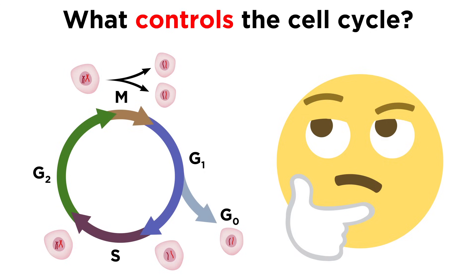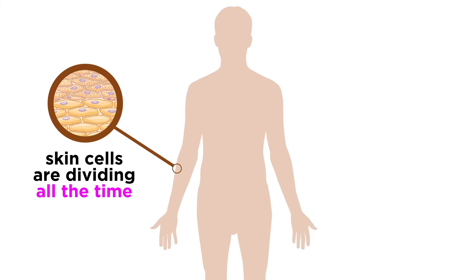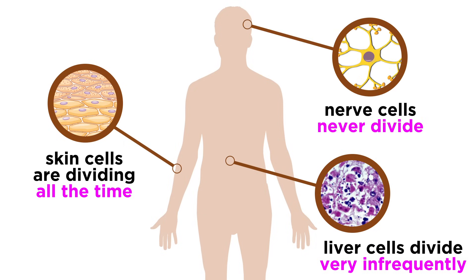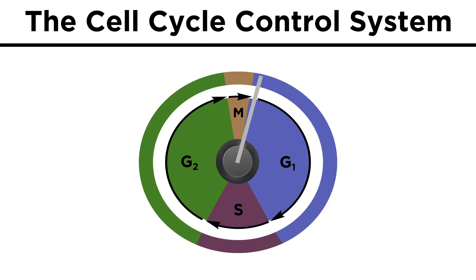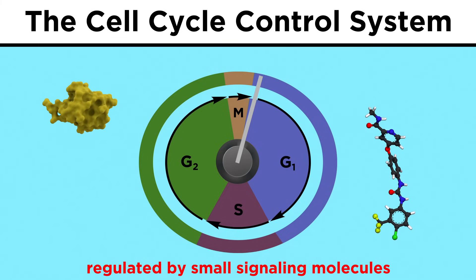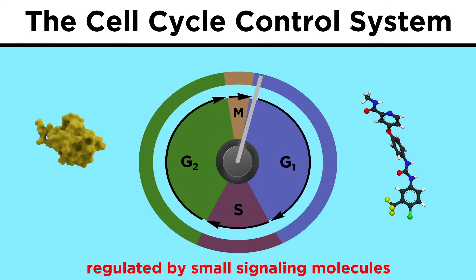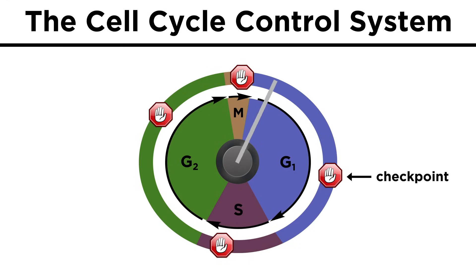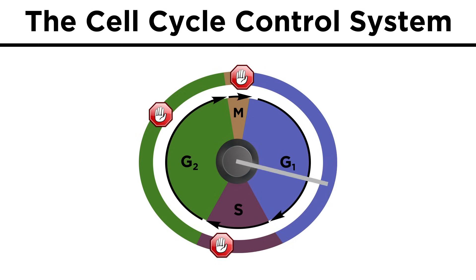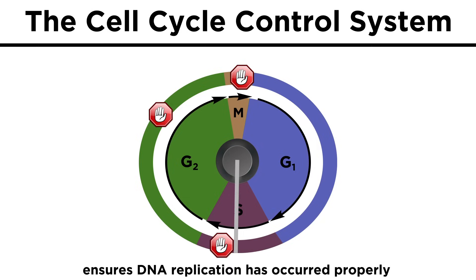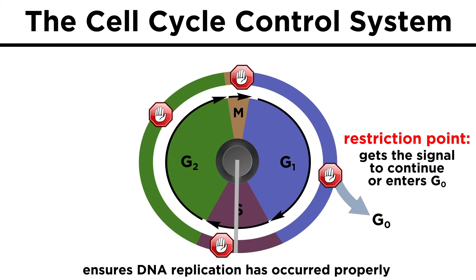What controls the cell cycle? How does a cell know when to enter the next phase? This is crucial to understand, because some cells inside the human body, like skin cells, are dividing very frequently, while liver cells don't divide much at all, and fully formed nerve cells never do. These discrepancies can be accounted for when we examine the ways that the cell cycle is regulated on the molecular level. This is called the cell cycle control system, and it is regulated by small signaling molecules in the cytoplasm. These trigger and coordinate key events throughout the cycle. There are moments during or in between phases called checkpoints, where the cell must receive a specific signal to move forward — one during the S phase to ensure DNA replication occurs without problems, and others during the G1 phase, at the end of G2, and during the M phase.